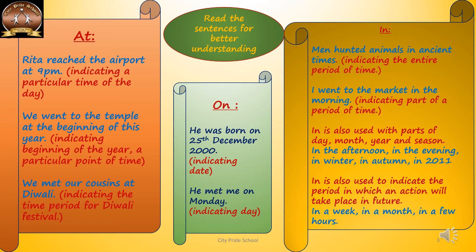'In' is also used to indicate the period in which an action will take place in the future — like if I'm not sure about the action and just want to show it will happen during that time. For example: in a week, in a month, in a few hours. 'On' — he was born on 25 December 2000. It indicates the date. He met me on Monday. Here it is indicating a specific day.